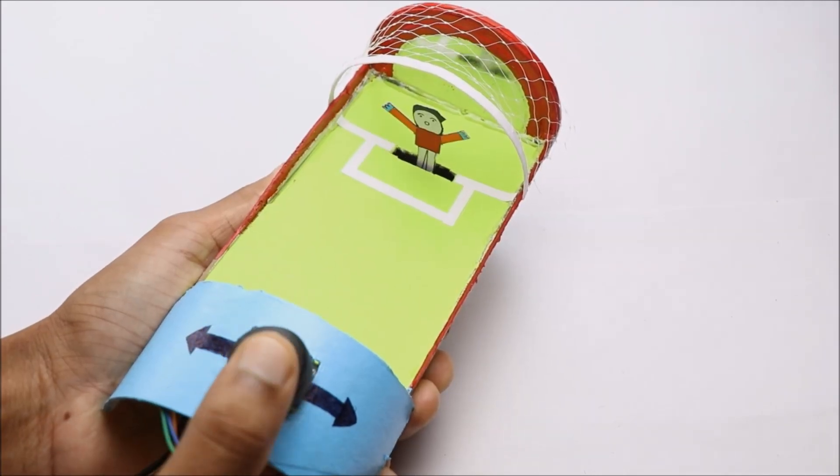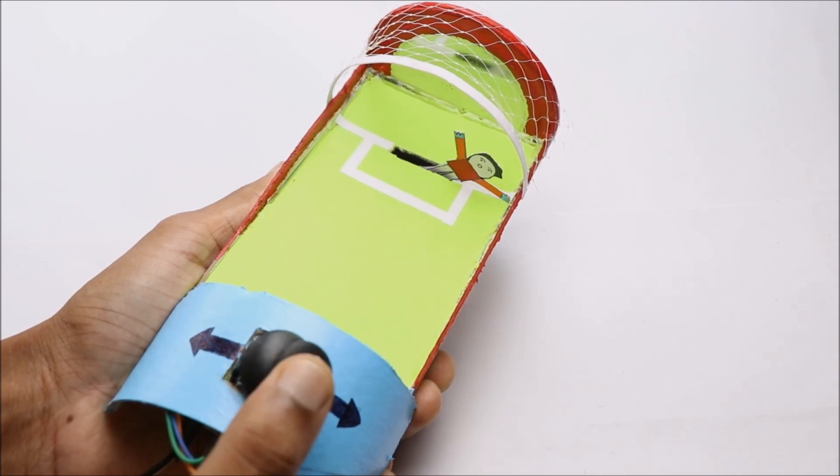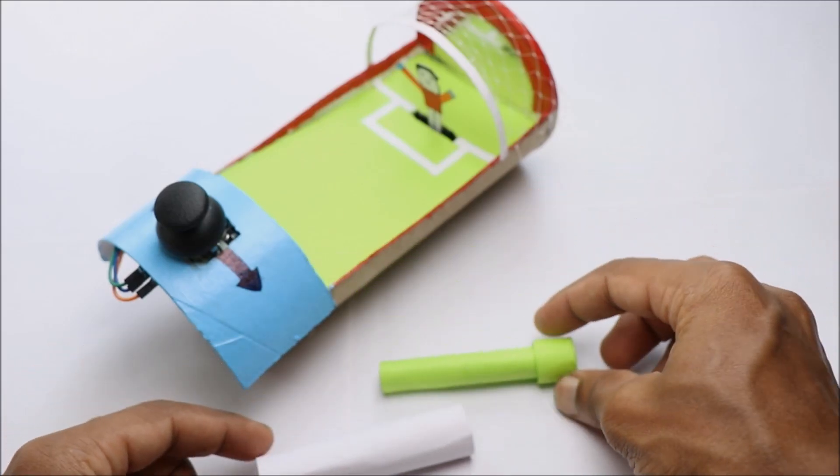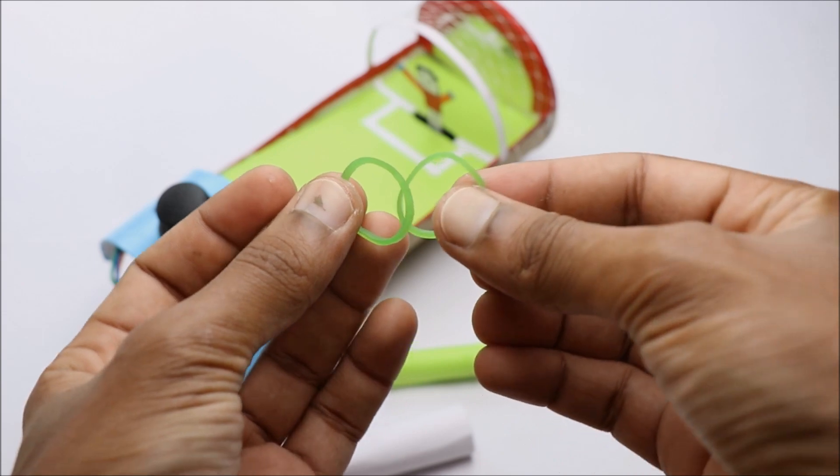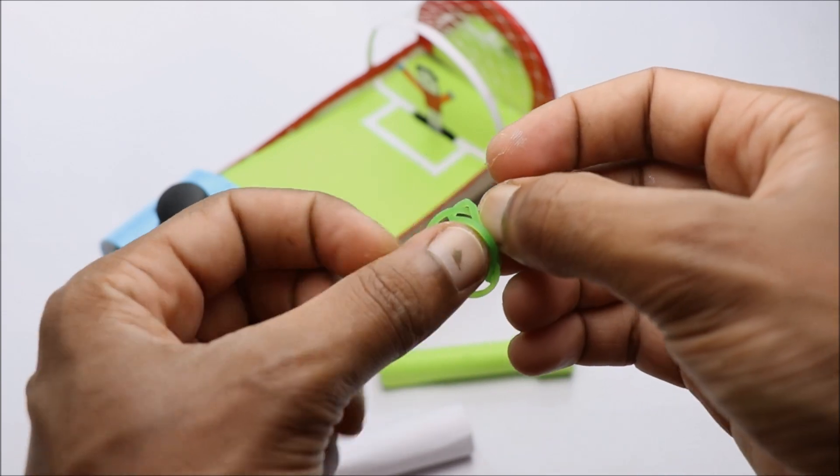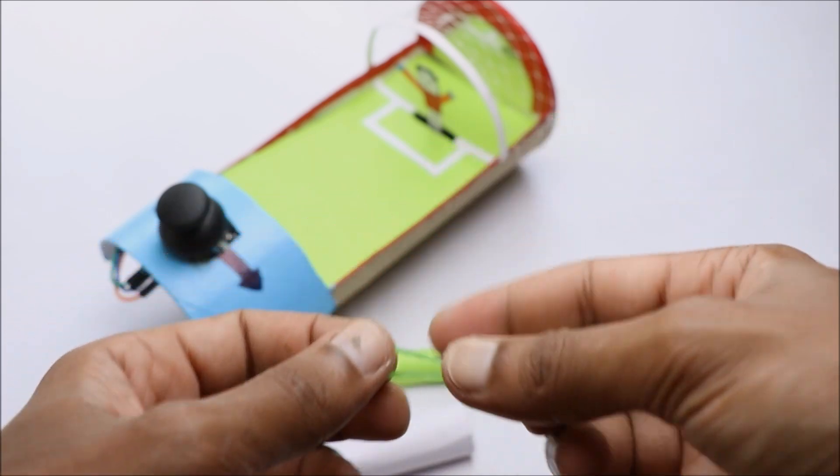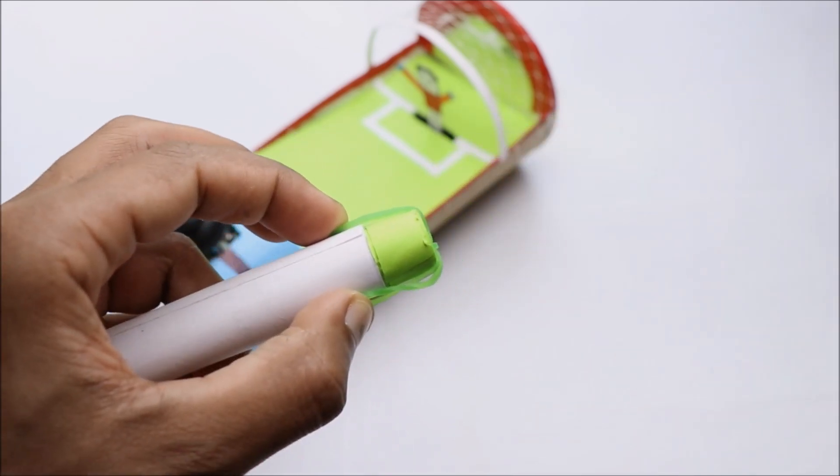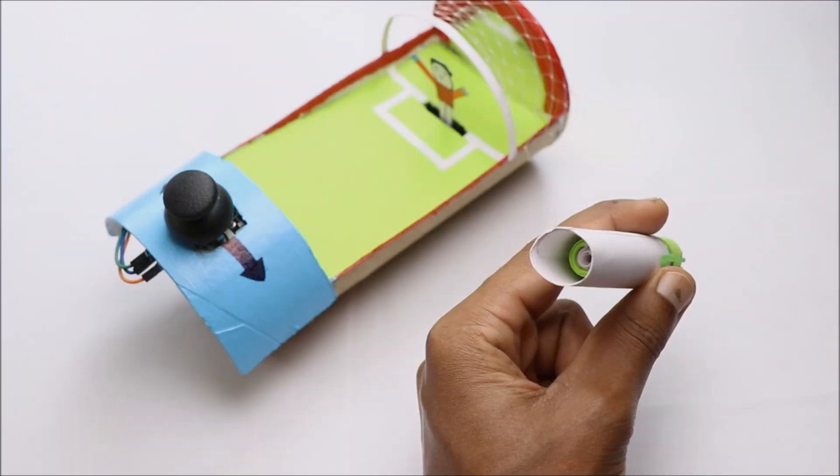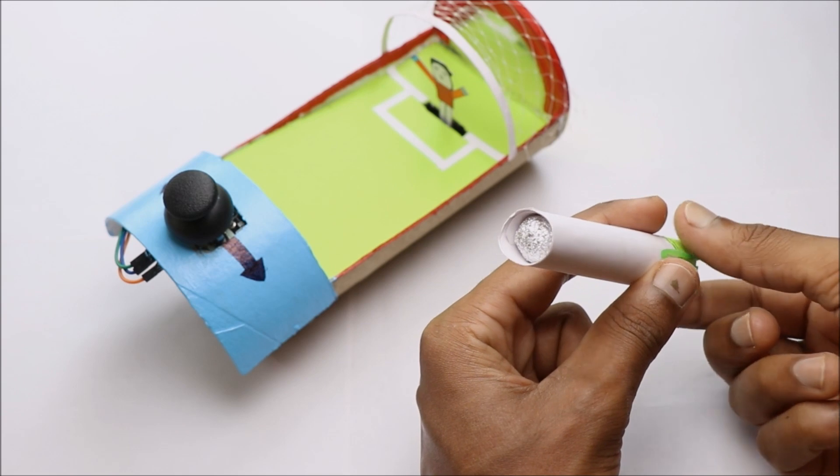Thumb joystick will be controlled by one player, whereas the ball will be controlled by the other player. To make the ball throwing mechanism, I'll be using these tubes of paper powered by two elastic bands. Make sure the speed of the ball is not too fast.